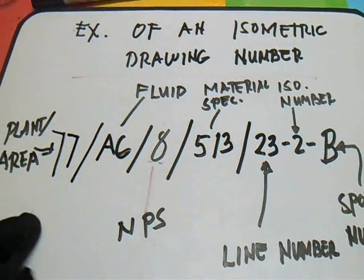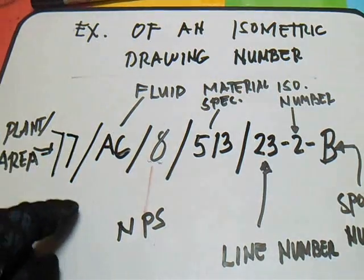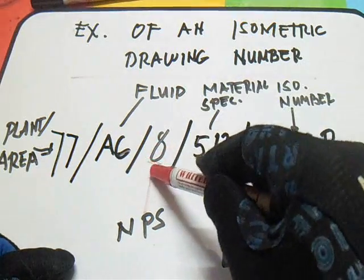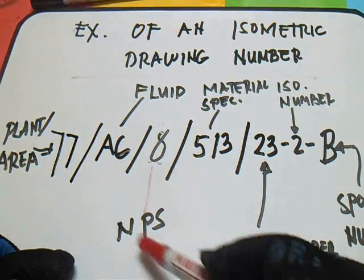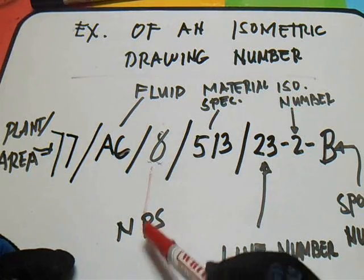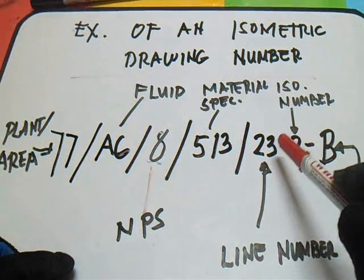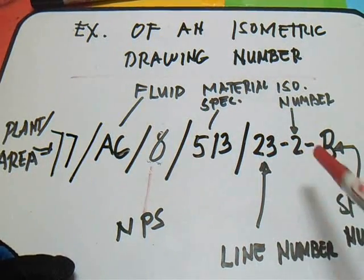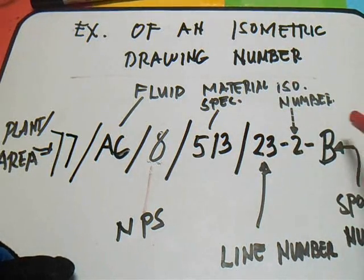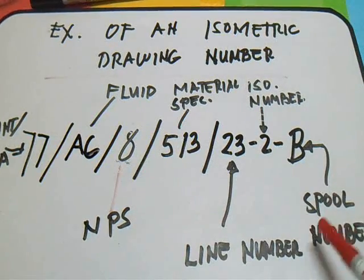So to recap: we have a slash, AG is the fluid, 8 is the NPS or nominal pipe size, 513 is the material specification, 23 is the line number, the number 2 is the ISO number, and the letter V is the spool number.